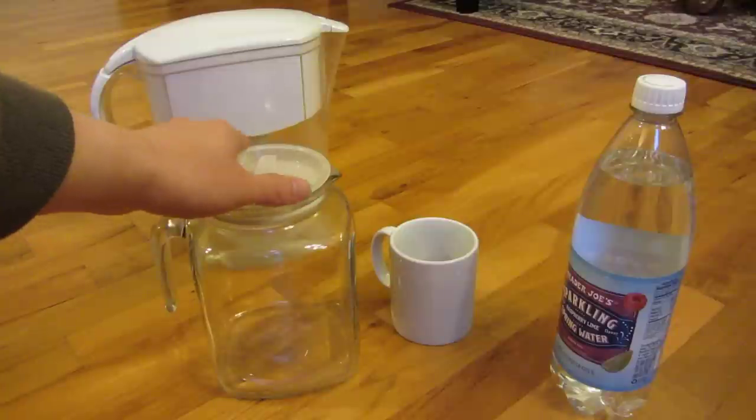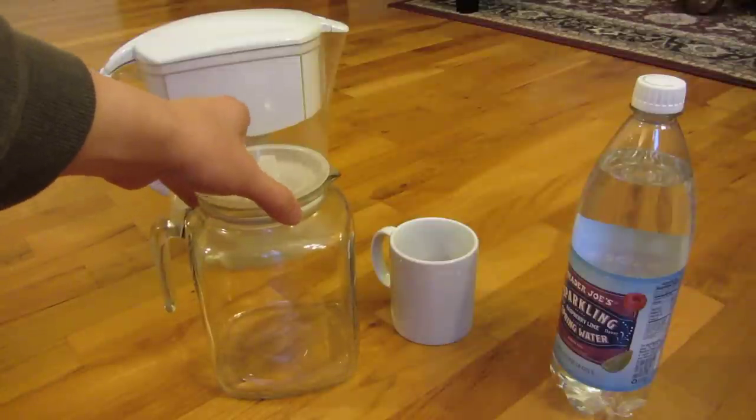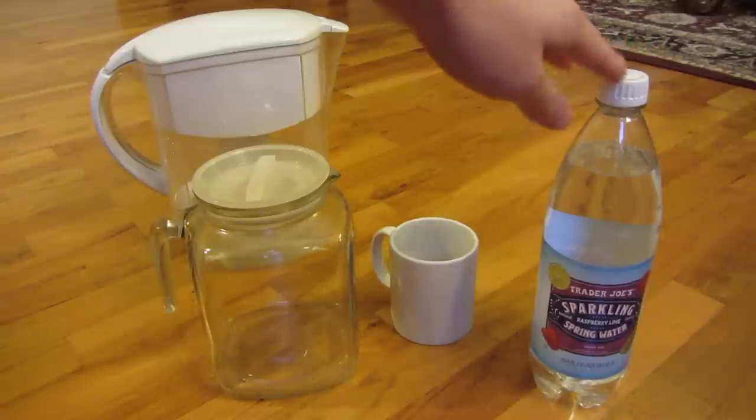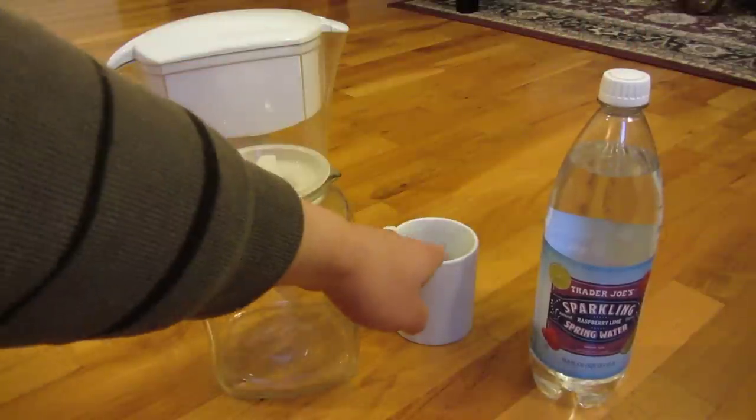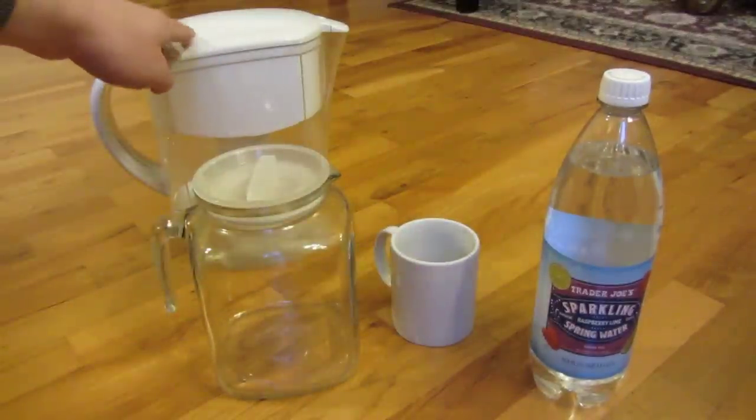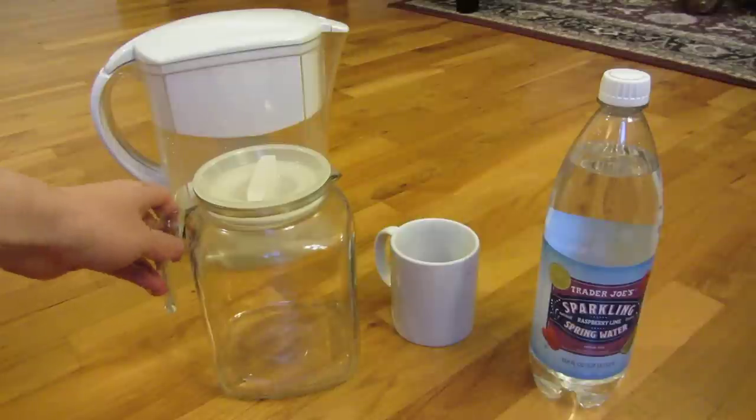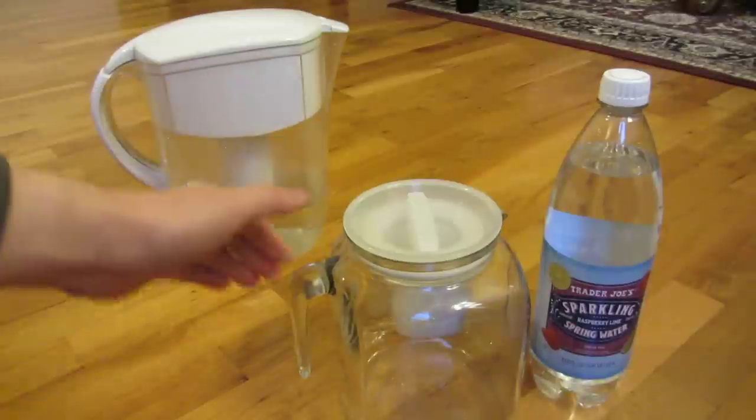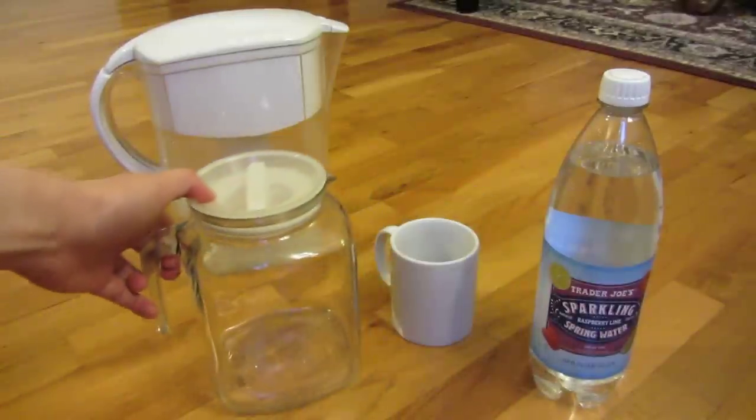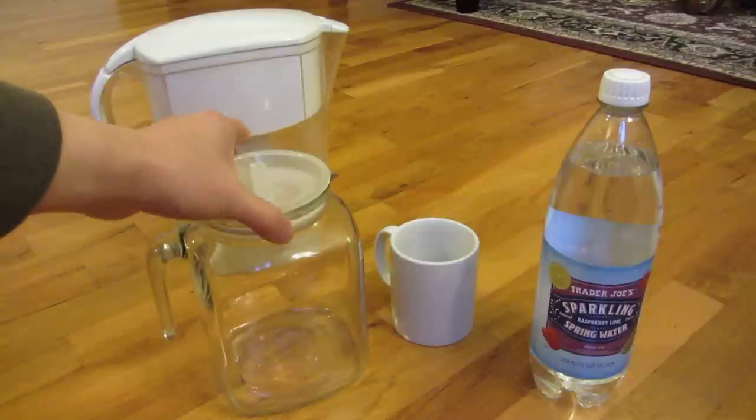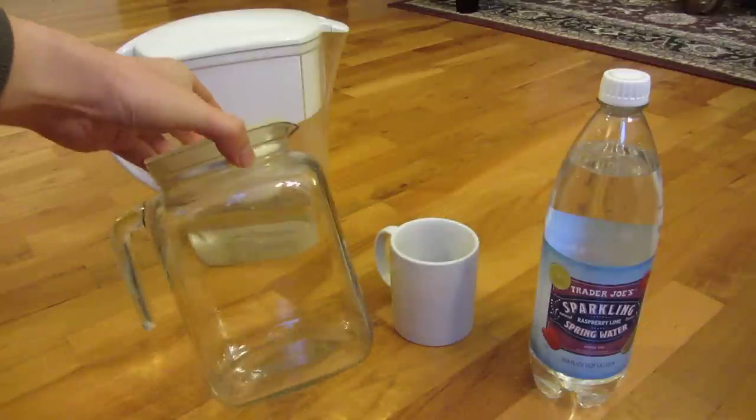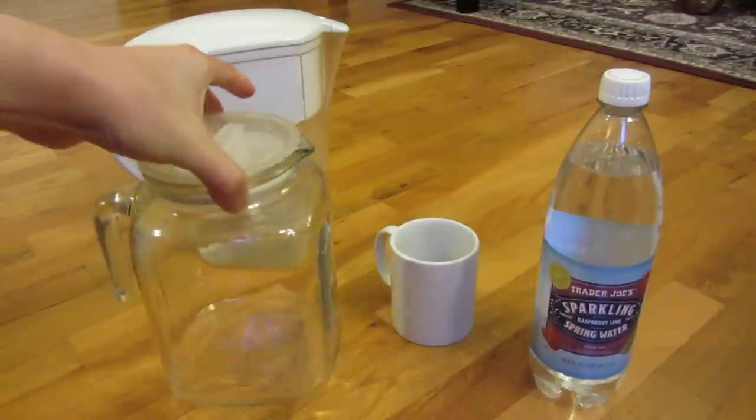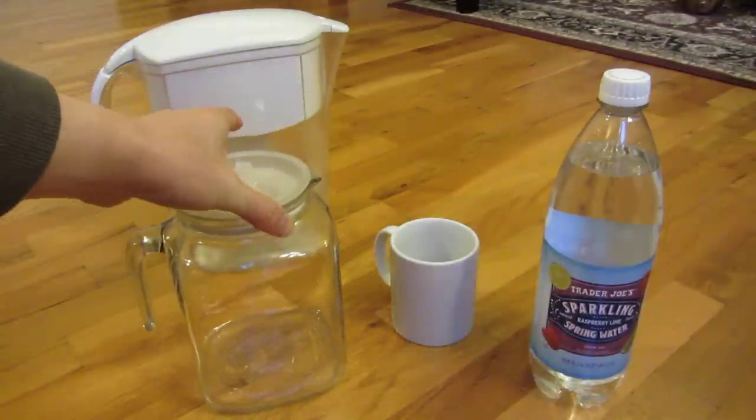So you could see here I have the Frigovere jug, here's a 1-liter water bottle and a normal cup, and behind here is your standard Brita filter so you could compare the sizes. Now this is a complete 2-liter jug, and in fact it's a lot better than 2 liters.